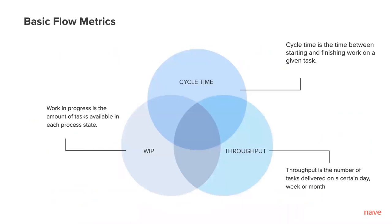There are three basic flow metrics that can help you measure the performance of your workflows. Cycle time, which measures the time between starting and finishing work on a given task. Throughput, which is the number of tasks delivered on a certain day, week, or month. And work in progress, the amount of tasks active in each process stage. The goal is to limit work in progress, reduce cycle times, and increase throughput.